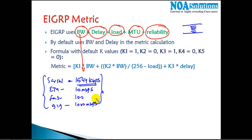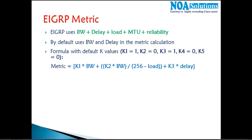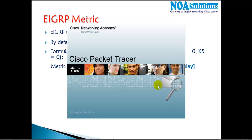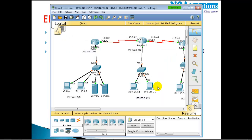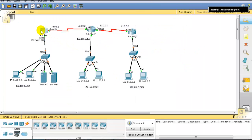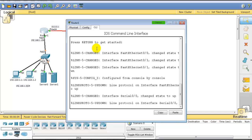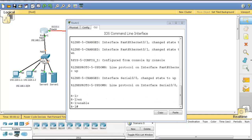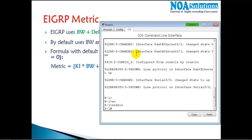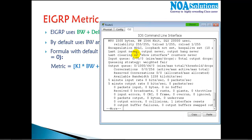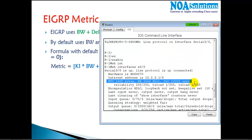Every interface has a specific bandwidth, and we can change it if needed. Let me open the command line and verify. Using the command 'show interface s0/0', you can see the five parameters. The default bandwidth on the serial link shows as 1544 kbps.